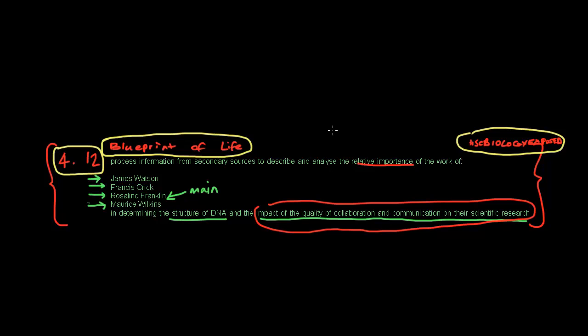Secondly, the quality of collaboration was quite weak, because if you think about it, Rosalind Franklin didn't actually want to release her paper or her findings until she was definite. However, Maurice Wilkins went against this, and even though she said not to, he ended up telling Watson and Crick, which did cause problems.